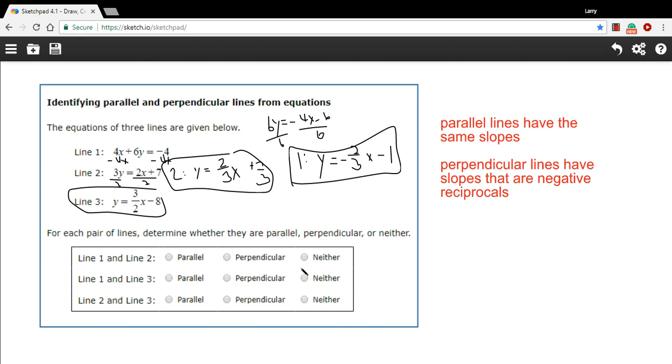It says, for each pair of lines, determine if they're parallel, perpendicular, or neither. So first, we're going to compare line 1 and line 2. So they're parallel if the slopes are the same. Line 1 has negative 2 thirds for a slope, and line 2 has a positive 2 thirds. So they're not parallel.